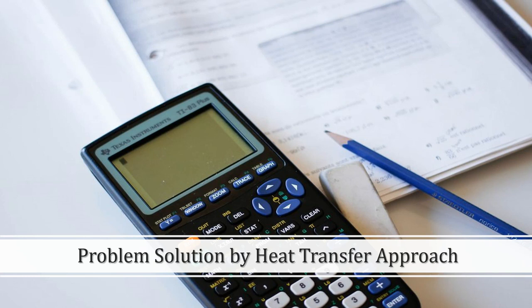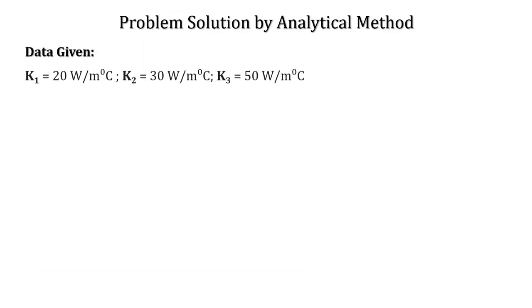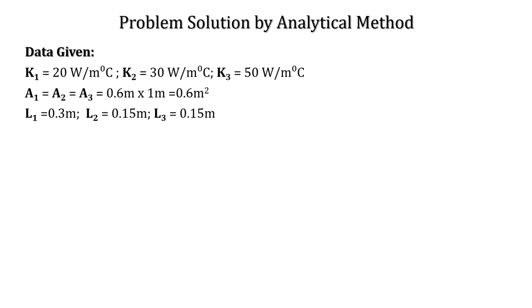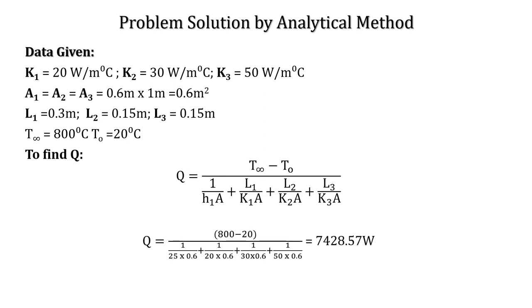Now let us see how the problem can be solved using numerical models through heat transfer. This is the data given: the thermal conductivities of the three components, their cross-sectional areas, and the corresponding lengths. The bulk temperature is 800 degrees Celsius and the outer temperature is 20 degrees Celsius. To find Q, we use this formula for the composite wall, and the value will be 7,428.57 watts or 7.42 kilowatts.